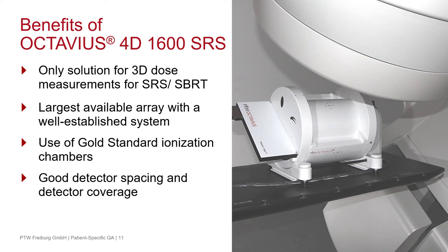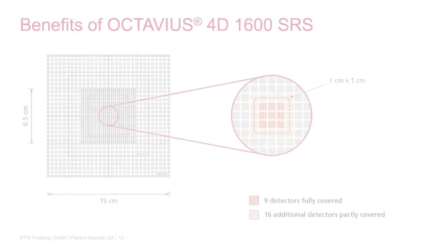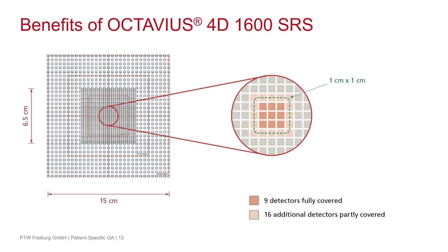For detector spacing and coverage, I want to show you a picture. Here you can see our detector: for a 1 cm² field, you have nine detectors fully covered and 16 additional detectors partly covered — so in total 25 chambers contributing directly to the measurement of a 1 cm² field. The field coverage in the center area is 85%, and there is nearly no space between the single chambers, so there are no blind zones.